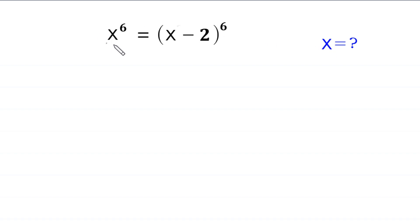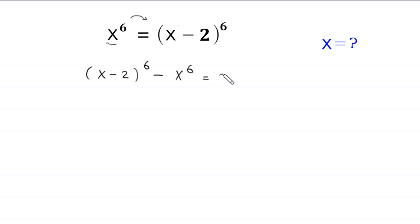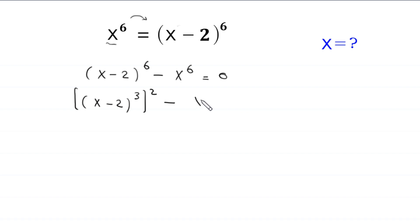First, we move this x to the power 6 to the right hand side. So this will become x minus 2 whole to the power 6 minus x to the power 6 is equal to 0. Now, x minus 2 whole to the power 6 can be written as x minus 2 whole cubed, whole squared, minus x to the power 6, which can be written as x cubed whole squared, is equal to 0. We have difference of two squares.